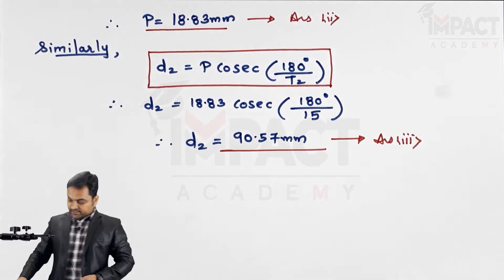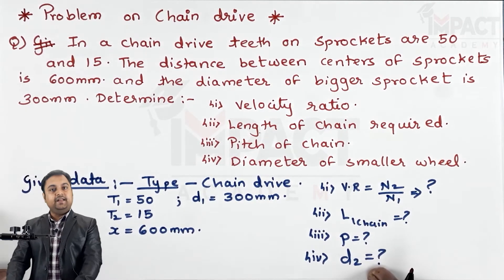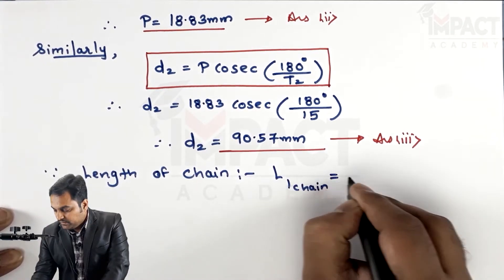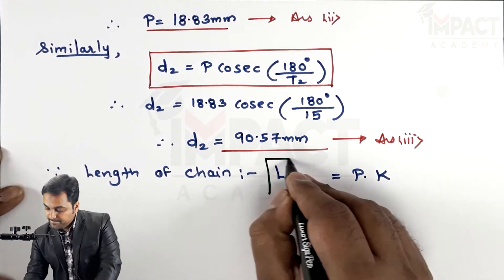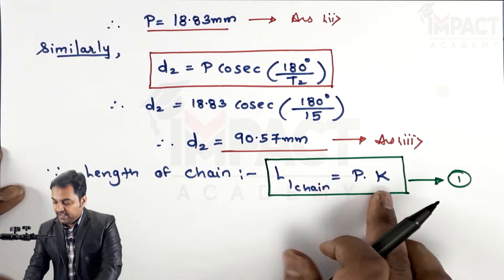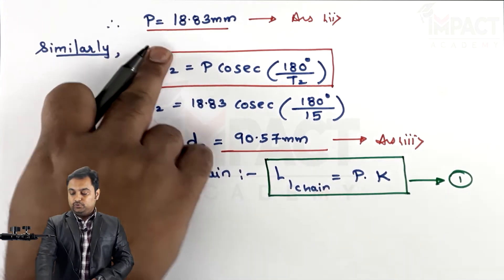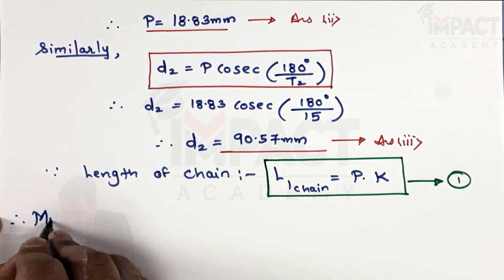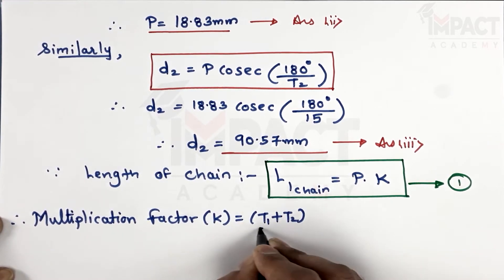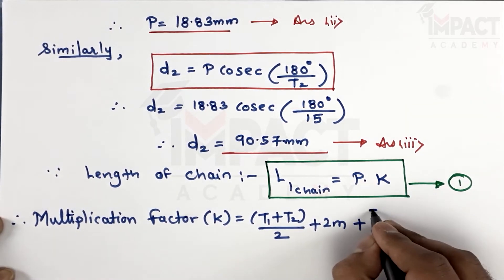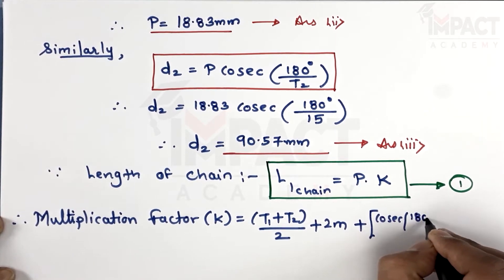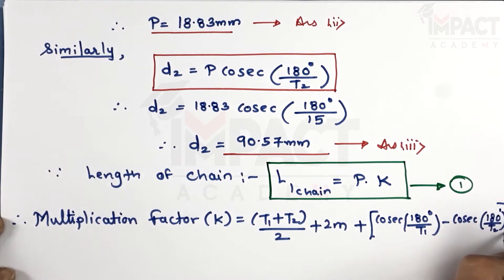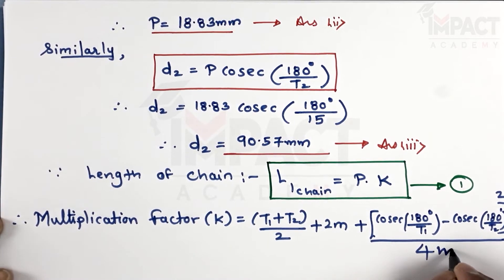Next, having found the velocity ratio, pitch, and d2, I'll calculate the length of chain. The formula is: length of chain = pitch × k, where k is called the multiplication factor. The formula for k is: k = (t1 + t2)/2 + 2m + [(cosec(180°/t1) − cosec(180°/t2))² / 4m].